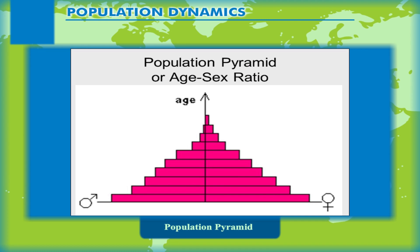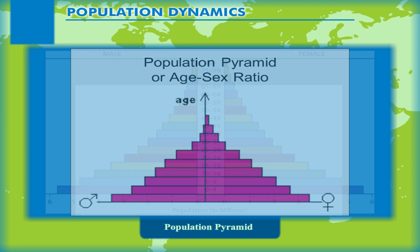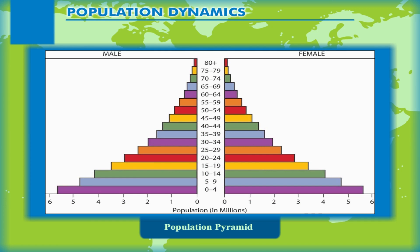It shows the percentage of the total population subdivided into males and females in each of those groups. The shape of the population pyramid tells us about the people living in that particular area or country.